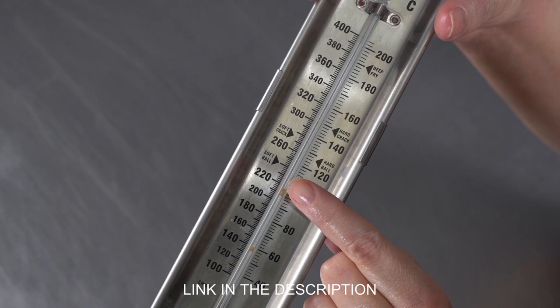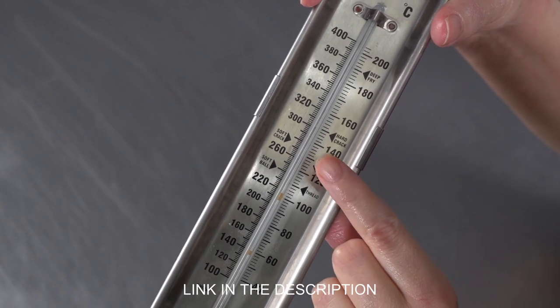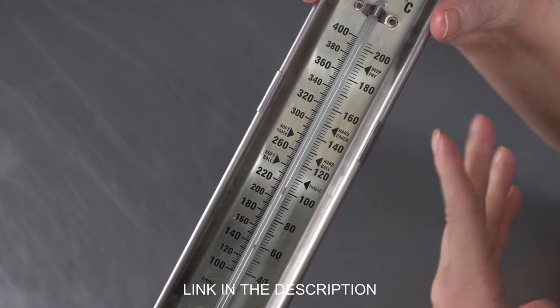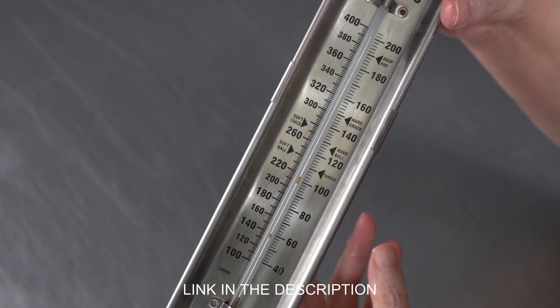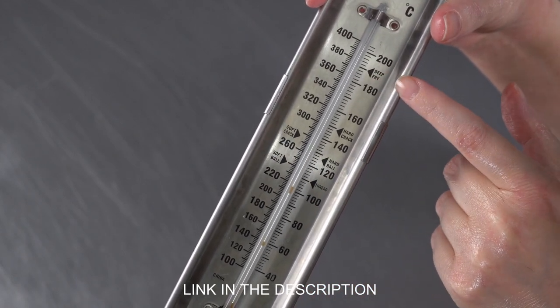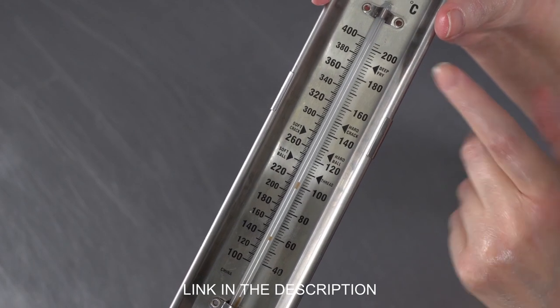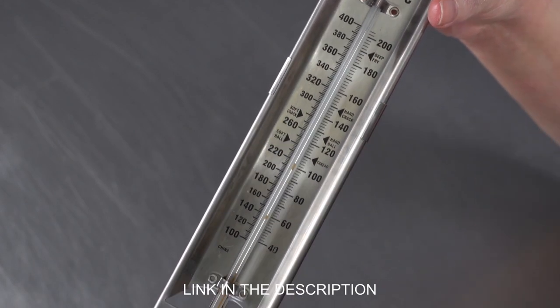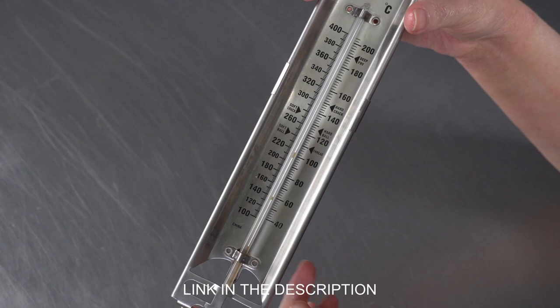So we have things like thread, softball, hardball, soft crack, hard crack. Whether you're making a sugar syrup or a batch of caramels, or as you can see up here, if you're looking to do some deep fried items like maybe some great doughnuts, these can be really useful tools.